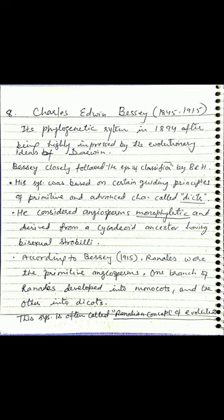His system was based on some guiding principles of primitive and advanced characters called dicta. There were 24 dicta principles; Hutchinson also followed these in his classification. Bessey considered angiosperms monophyletic and derived from a pteridophyte ancestor having bisexual strobilar structures. According to Bessey, Ranales were the primitive angiosperms.